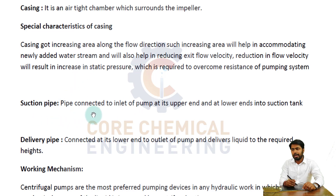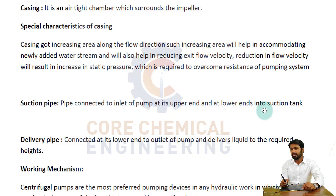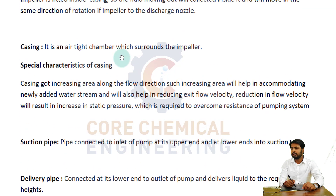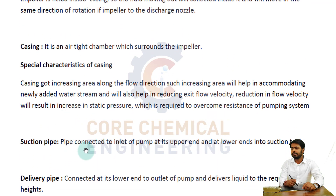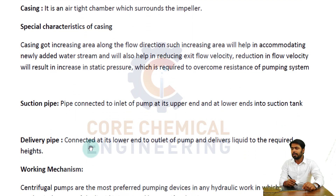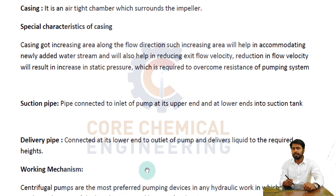Now the suction pipe: it is a pipe connected to the inlet of the pump at its upper end and at the lower end into the suction tank. The delivery pipe is connected at its lower end to the outlet of the pump and delivers the fluid to the required height.